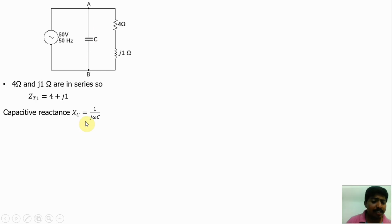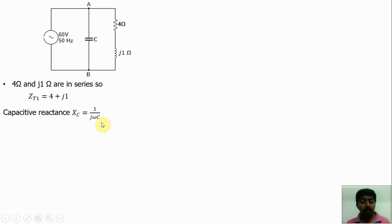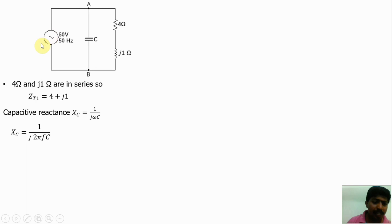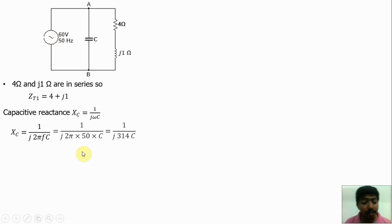The capacitive reactance X_c equals 1 divided by j·ωC. We know that ω equals 2πf. So X_c equals 1 divided by j·2πfC. Here the frequency is given as 50 Hz. Substituting, we get X_c equal to 1 divided by j·314C.